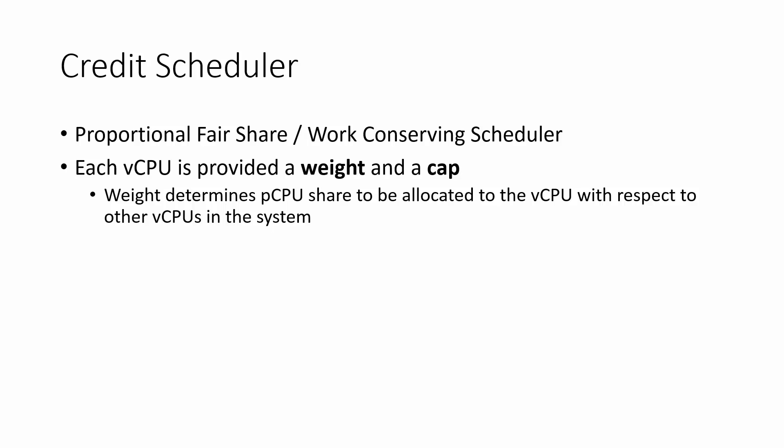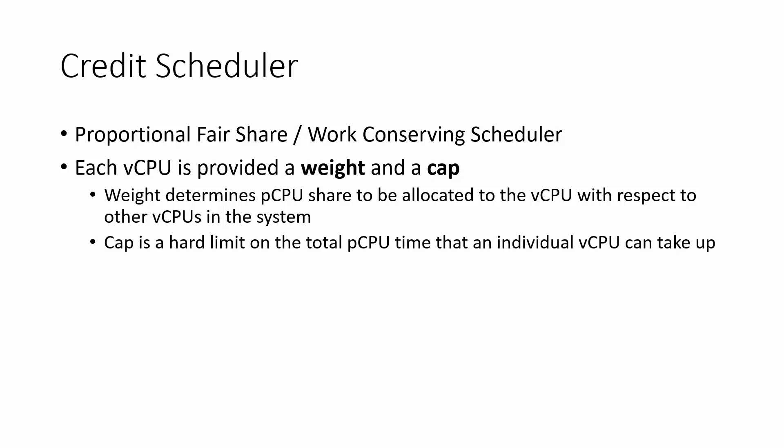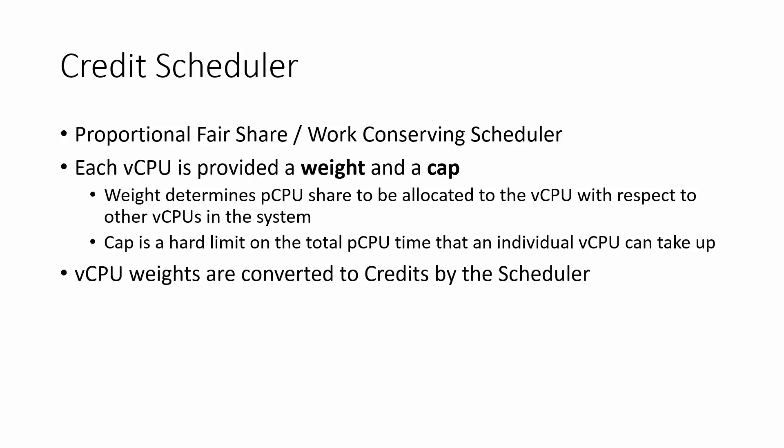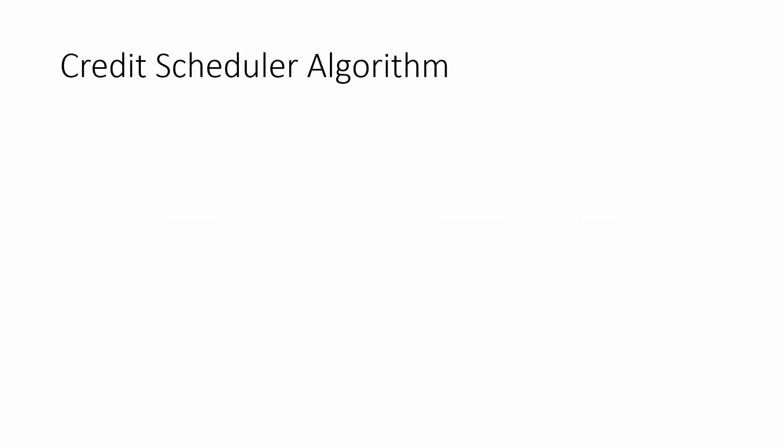The weight determines the relative importance for a virtual CPU and the physical CPU share to be allocated to that vCPU with respect to all other vCPUs in the system. The cap is a hard limit on the total physical CPU time that an individual vCPU can take up. vCPU weights are then converted to credits by the scheduler. Providing a weight on each virtual CPU is a useful feature and can be used to enforce SLAs by providers.